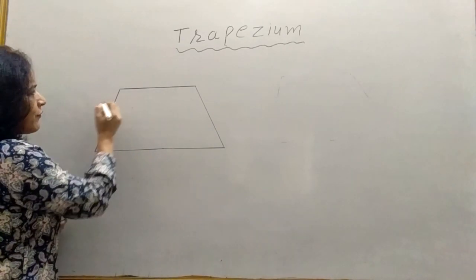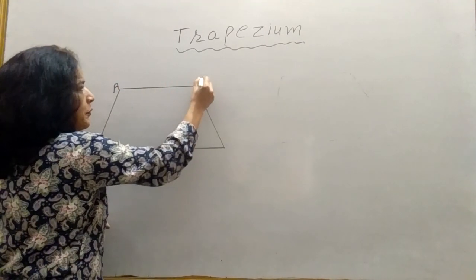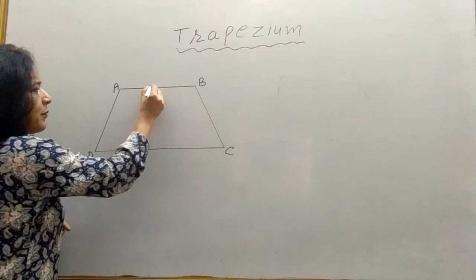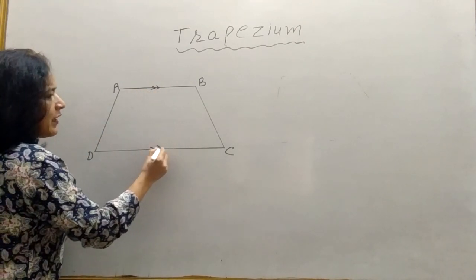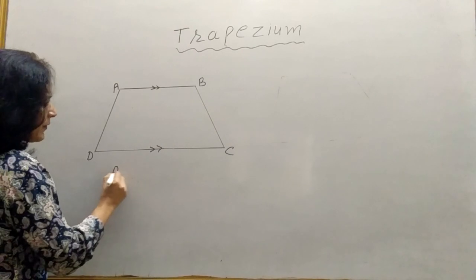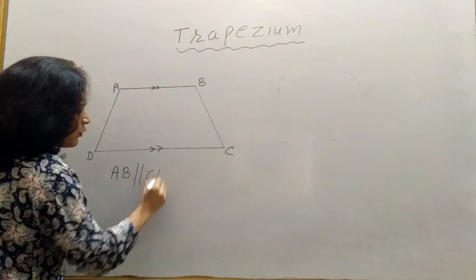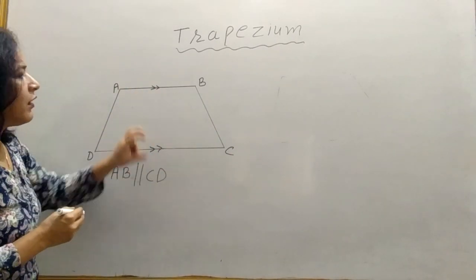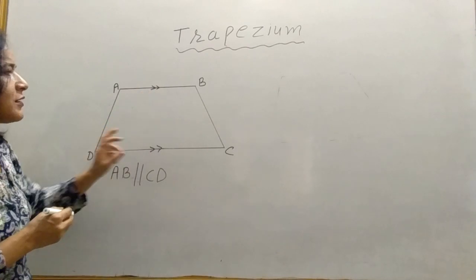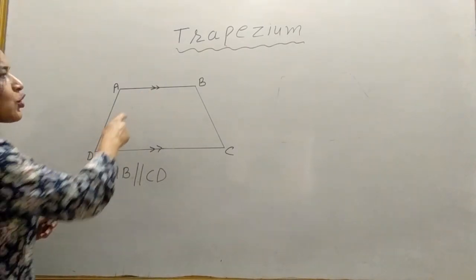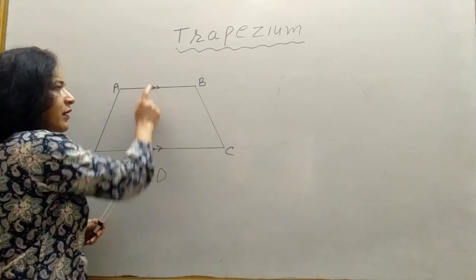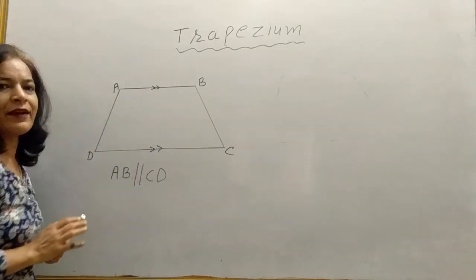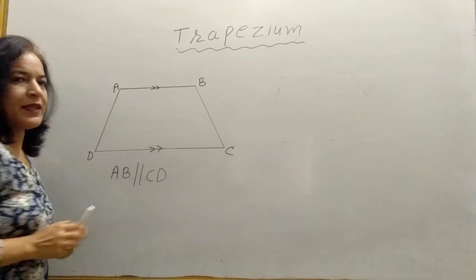If the name of this quadrilateral I give A, B, C, D — and suppose side AB is parallel to CD — then if in a quadrilateral one pair of opposite sides is parallel, it is called a Trapezium. Only one pair.